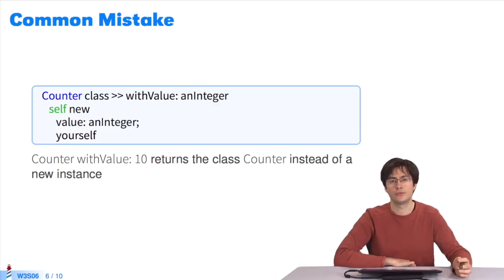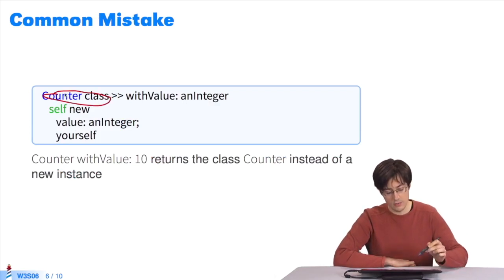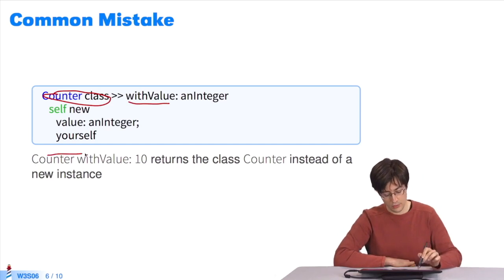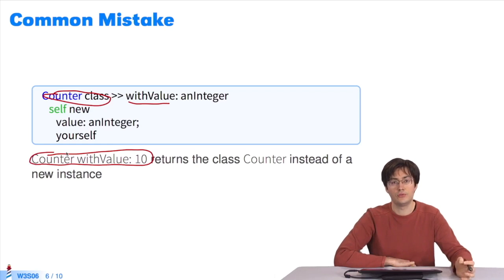On this slide, you can see a common mistake. Here, you wish to send the message with value to the class counter, to return a new counter with a value set as a parameter. So you want counter with value 10, to return a new counter which starts with value 10.